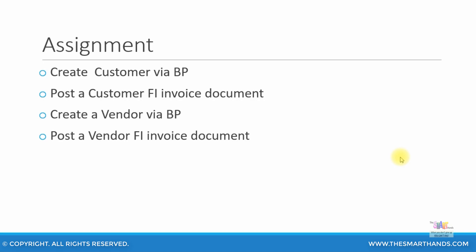In this presentation we saw how to post a simple document posting — one for a customer invoice and one for a vendor invoice. These are direct financial accounting invoices. We have not used the complete process path — for example, for vendor you would normally raise a purchase order, give it to the supplier, do a goods receipt, and then an invoice receipt. That is the full end-to-end purchasing process.